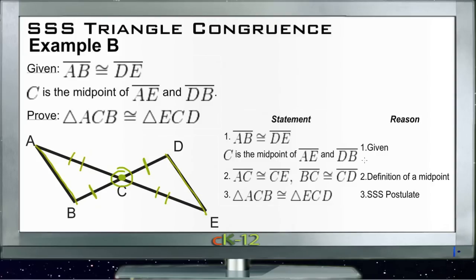Our first statement is just the given: AB is congruent to DE and C is the midpoint. Our second statement is that based on the definition of a midpoint, AC ≅ CE and BC ≅ CD. We now know we have one side, two sides, and three sides that are the same, so based on the Side-Side-Side postulate, we can state that triangle ACB is congruent to triangle ECD.